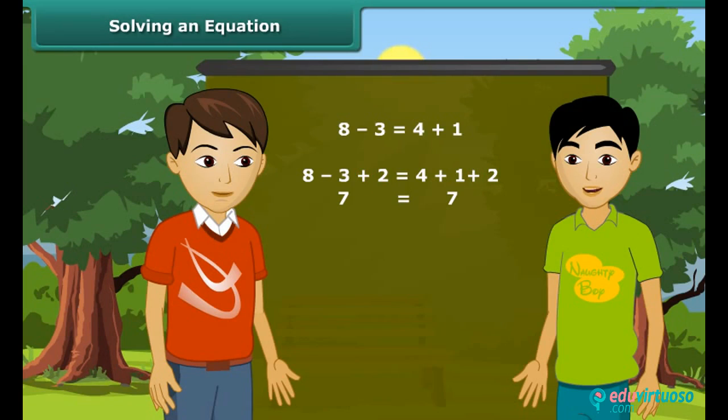Same is the case with the equation. If we add same number to both its sides, the equation remains unchanged. And if we subtract the same number from both its sides, the equation remains unchanged. If we multiply or divide the same number, then also the equation remains unchanged.